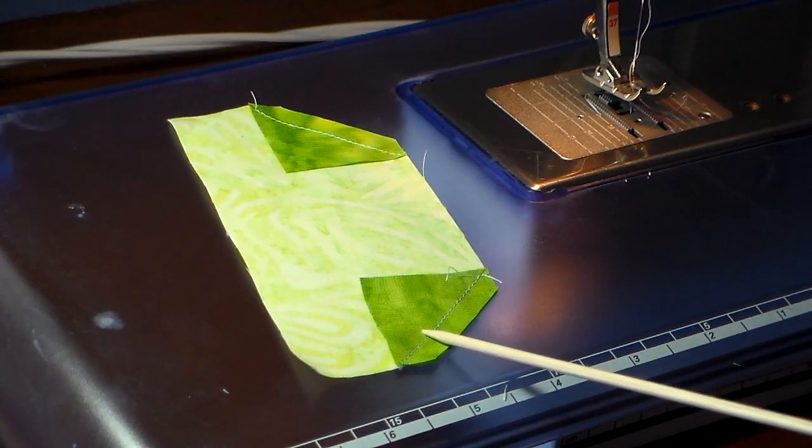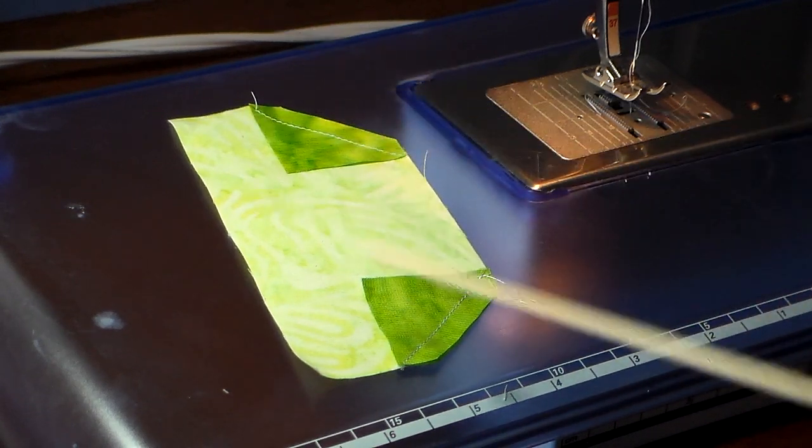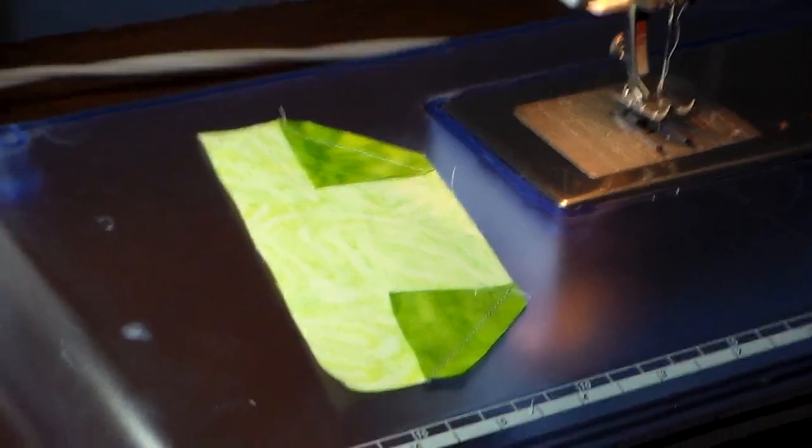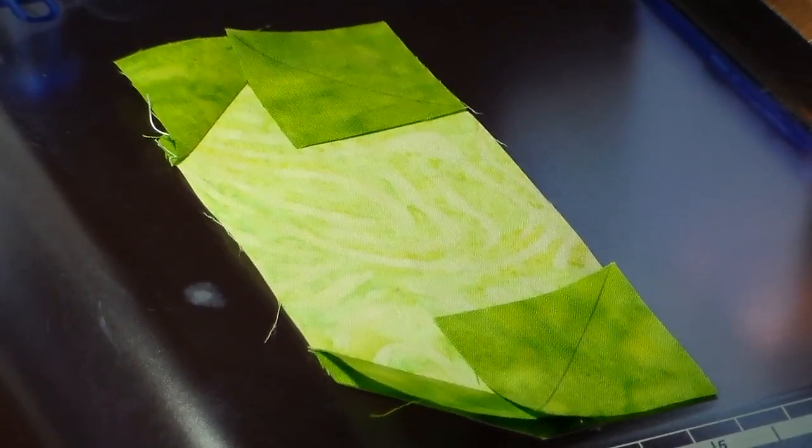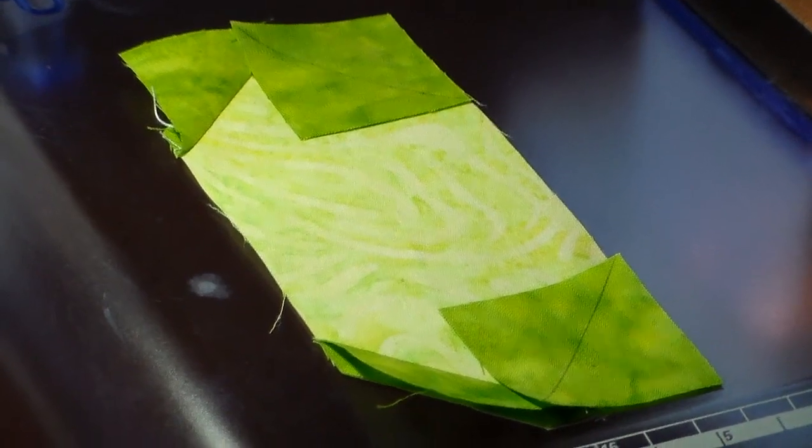So I've sewn it and I've trimmed the edges. Now I'm going to iron it and do the other two corners. I have flipped that piece and I've put the next ones on the corners and marked them and now I'm going to sew it.